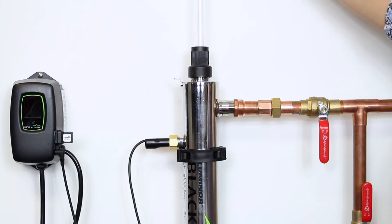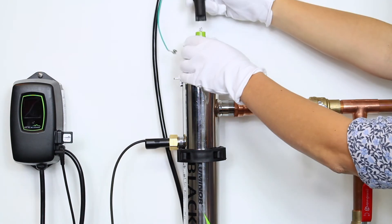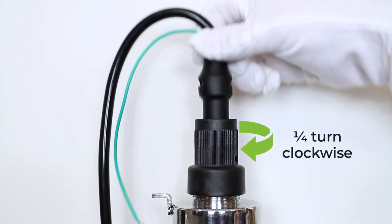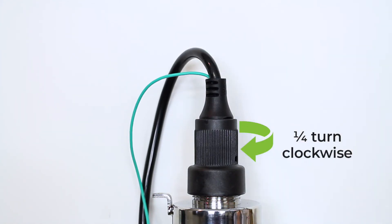Carefully place the lamp into the sleeve and connect it to the lamp connector. Push it into the gland nut and twist one quarter turn clockwise to lock it into place.